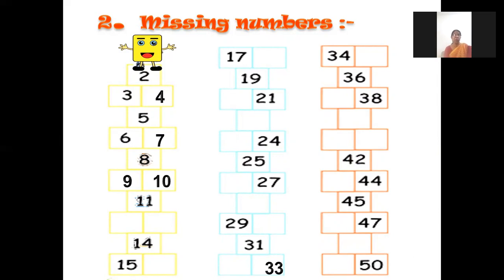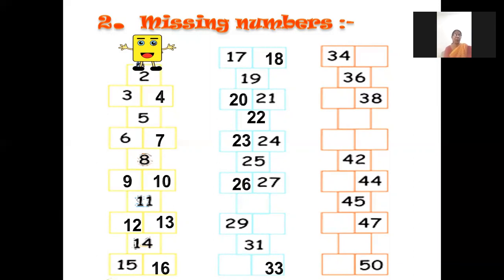11 is written, so we will write 12, 13. 14 is written, 15. Now we will write 16. 17 is written, so we will write 18, 19. After 19 will come 20. 21 is written, so we will write 22. After 22, 23. 24 is written, 25 is written, now we will write 26. 27 is written, now we will write 28, 29, 30, 31, 32, 33, 34.